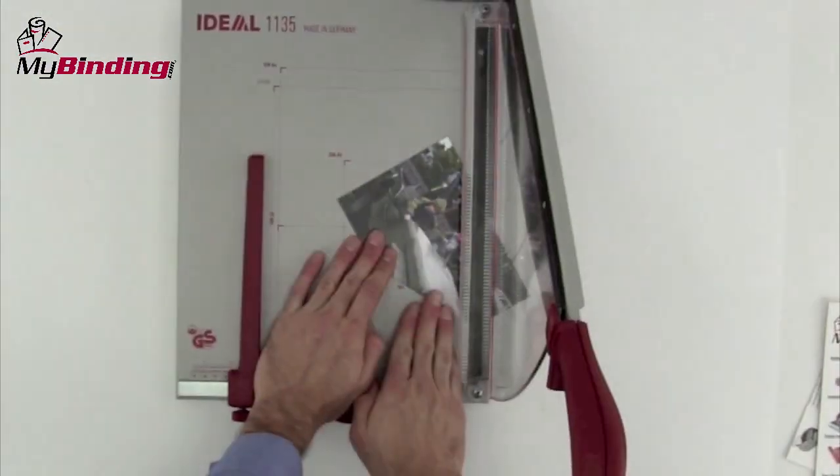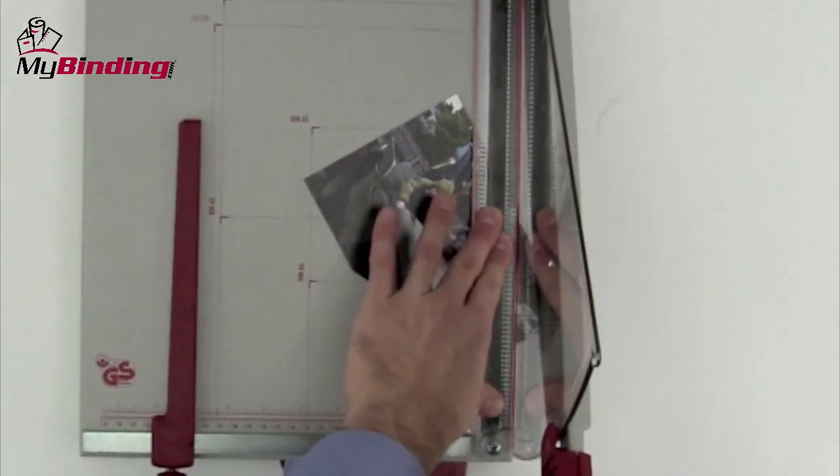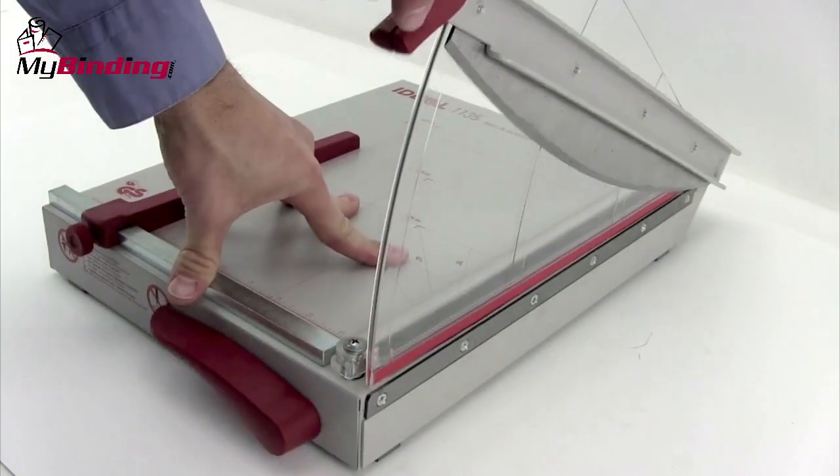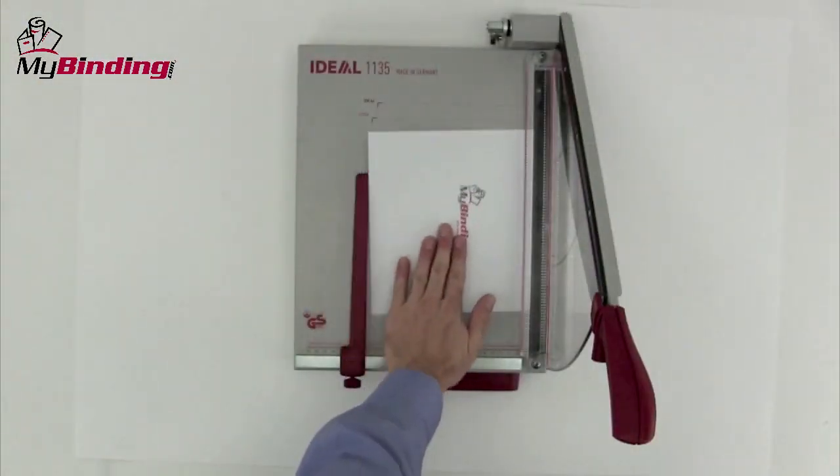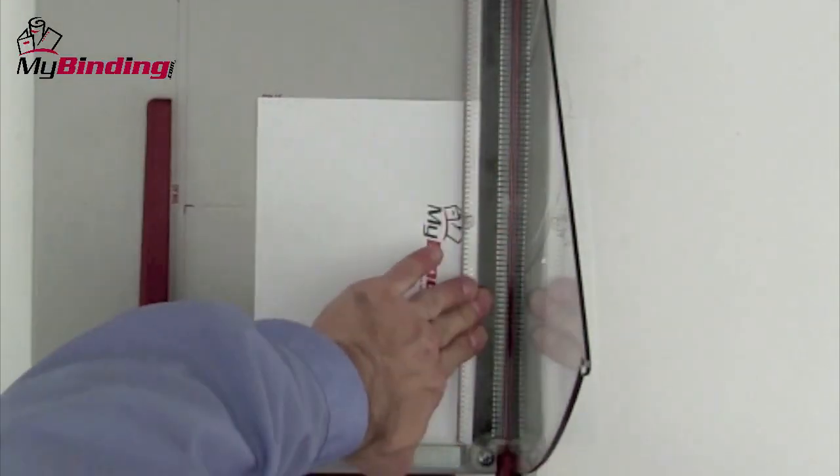It holds papers nice and secure so they don't slip around and your cuts are perfect every time. In addition to that, the blade is 13 ¾ inches long, allowing for a lot of cutting surface. It's incredibly safe and the paper holder also doubles as a great finger guard.